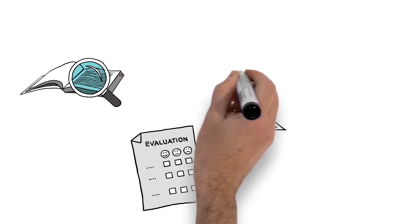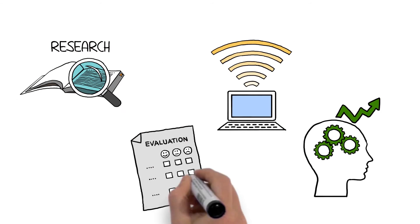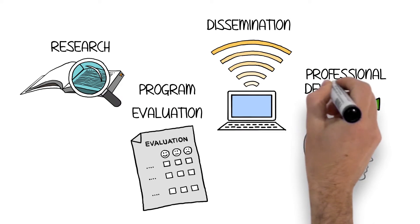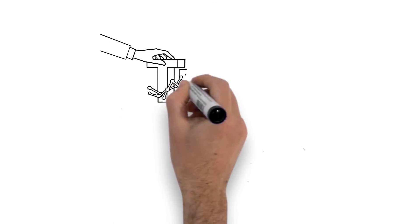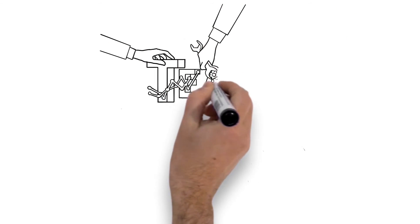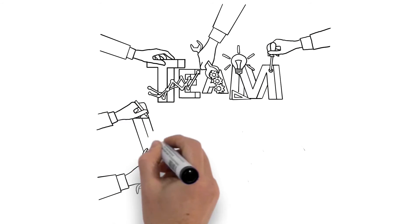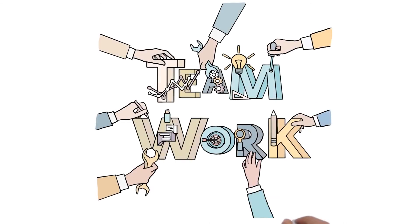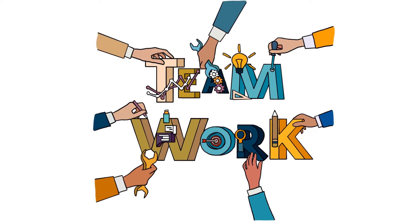IC maps can be used for a variety of purposes including research, program evaluation, dissemination, and professional development. One of the best parts about IC maps is having a team to help construct the various components and levels of acceptance. This helps all team members understand what the innovation is supposed to look like before it's implemented.